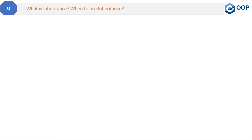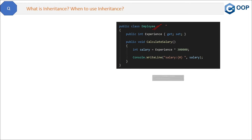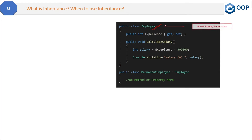Here is a very good question: what is inheritance, and when to use inheritance? Let's see the code example first. Here, employee is a parent class. Remember, base class, parent class, and super class are the same things — do not get confused by their different names.